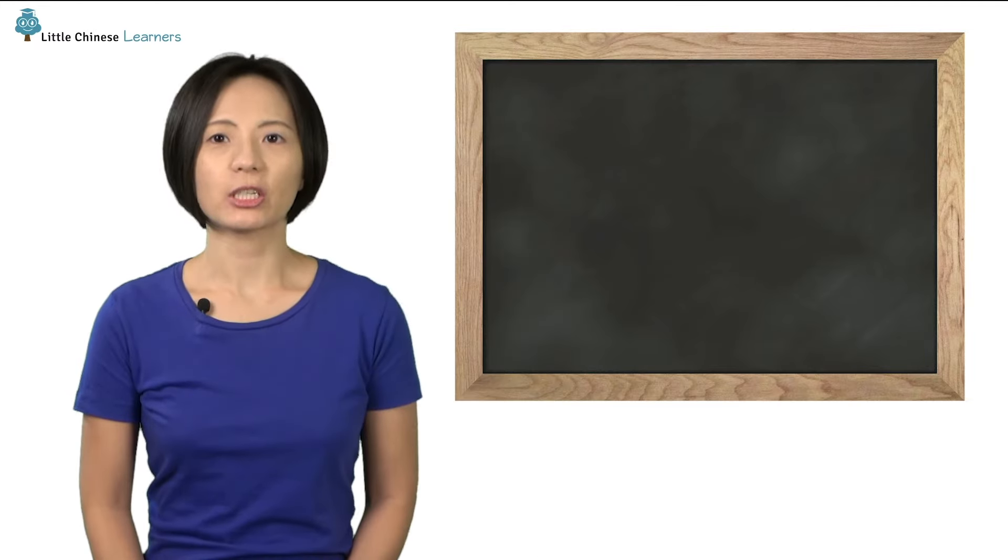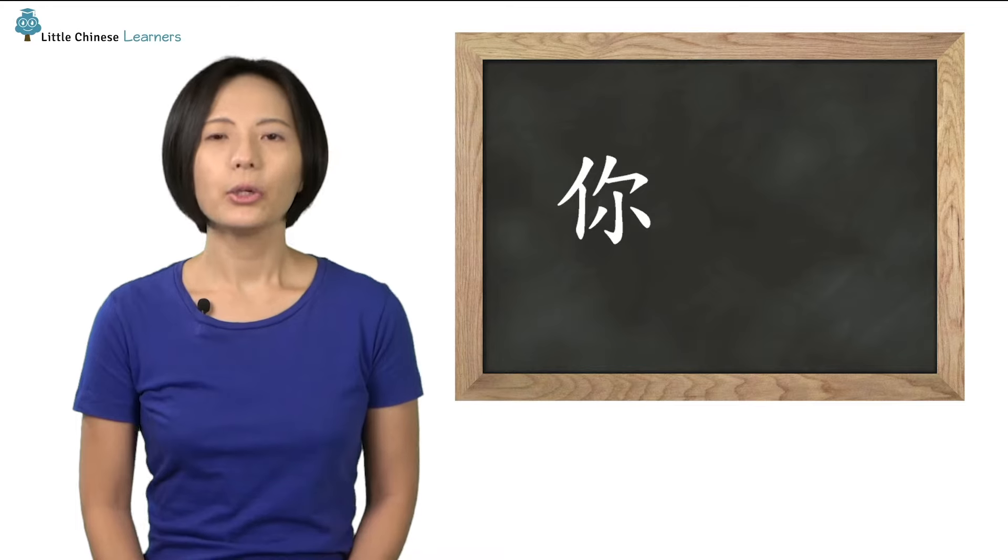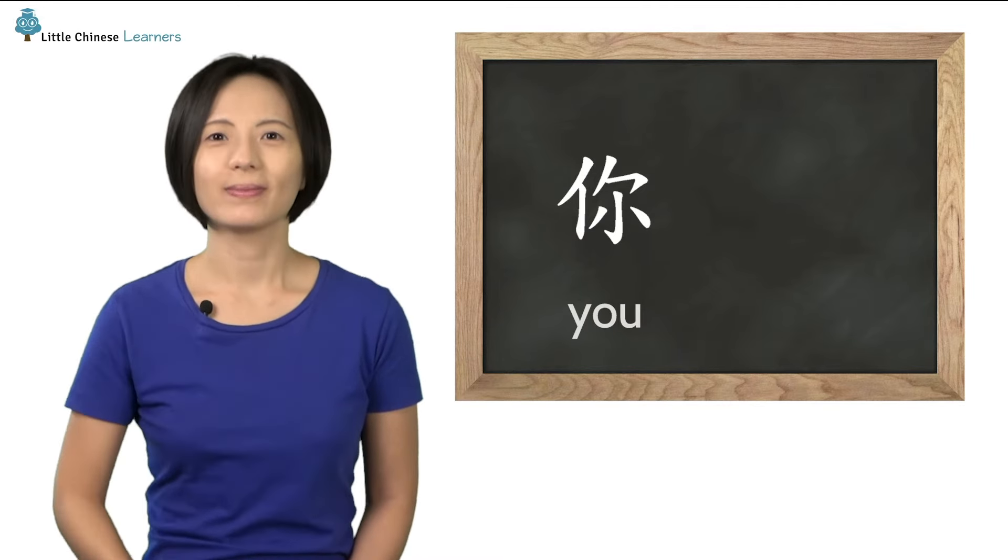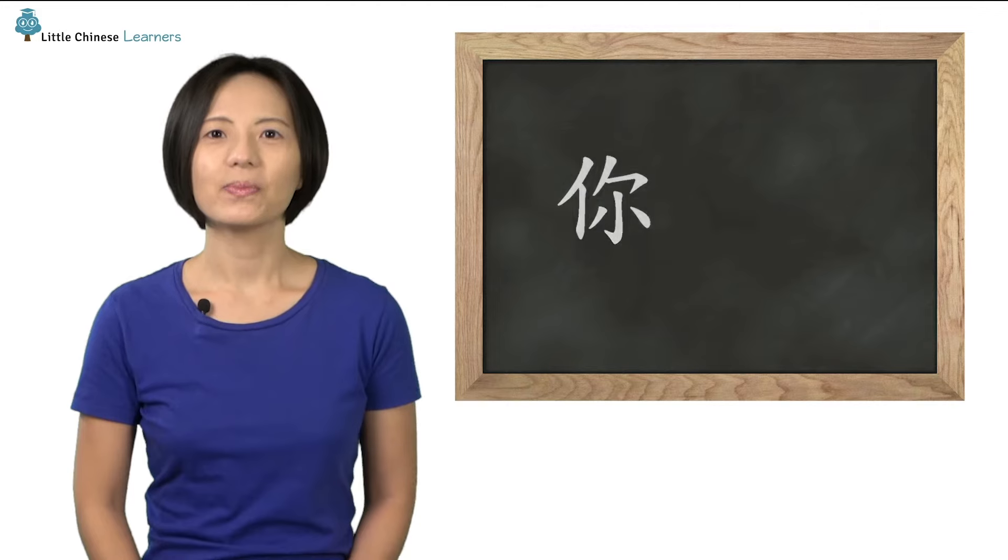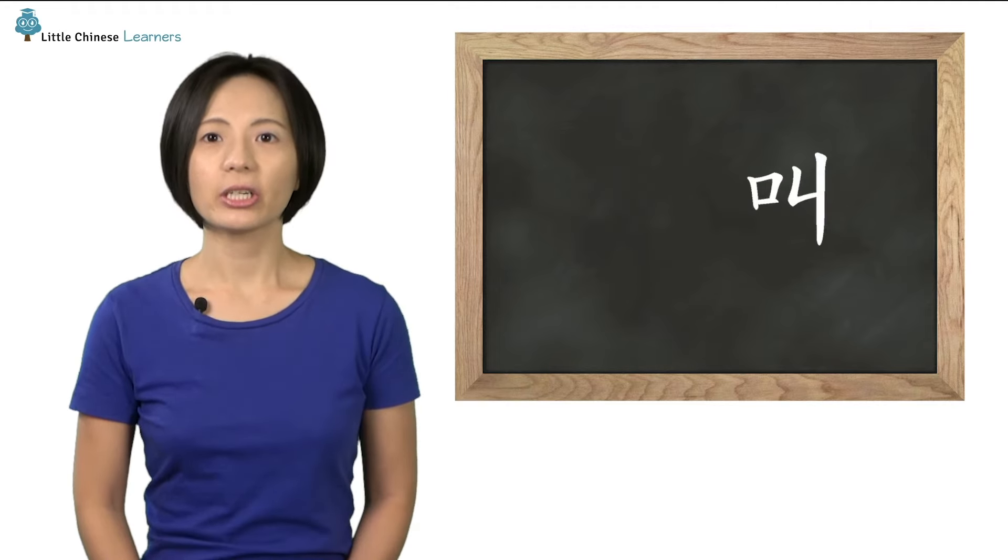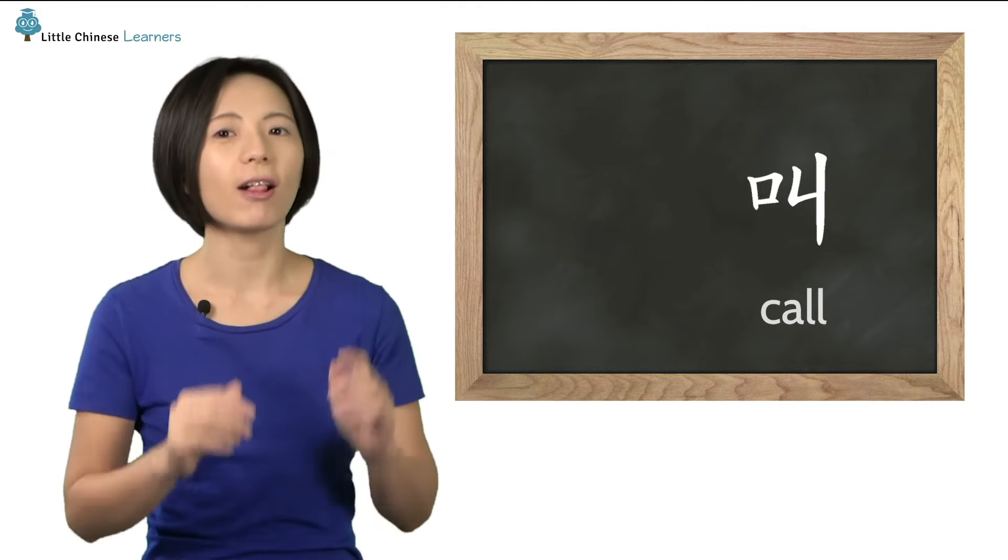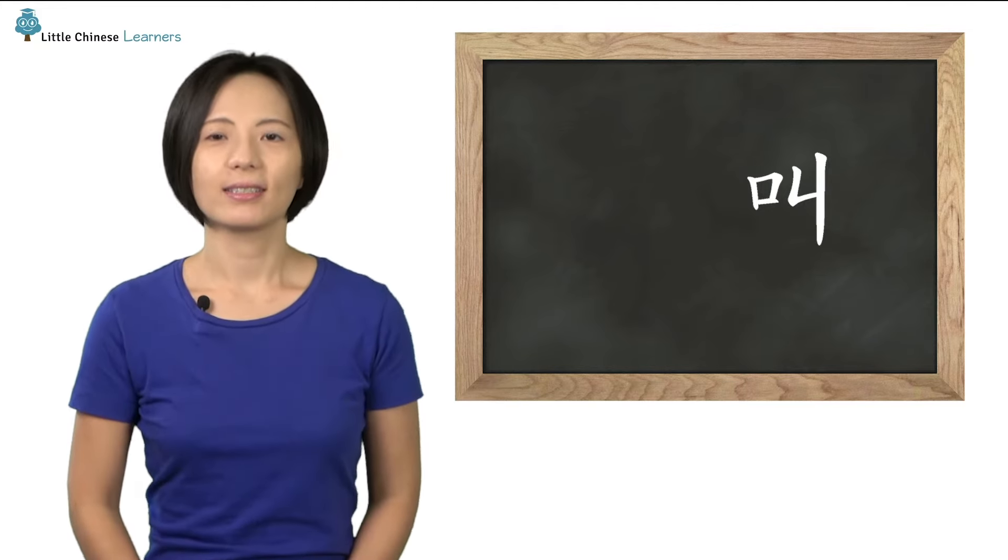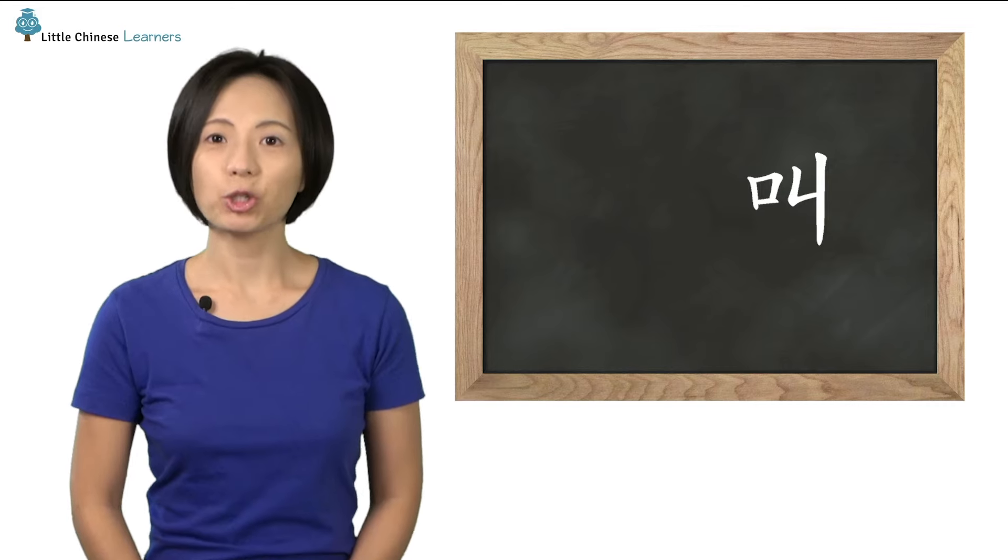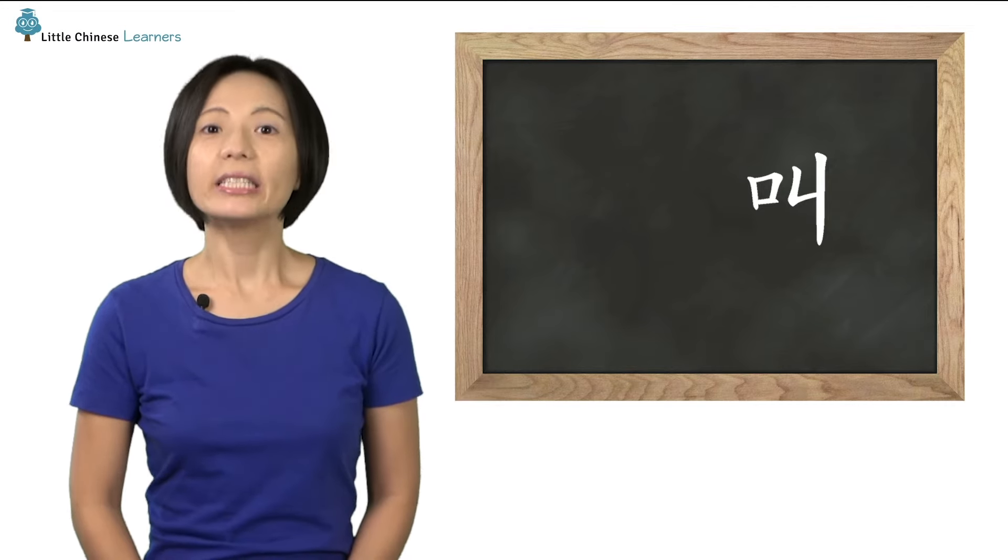The first character is 你. You already know that one, it means you. The second character is 叫, it means to shout or to call. 叫, 叫. Can you try it? Great, 叫.